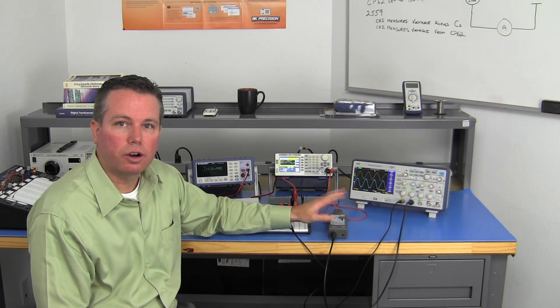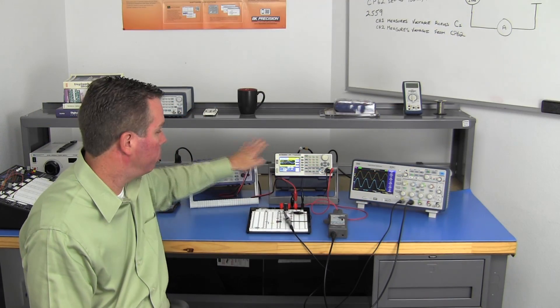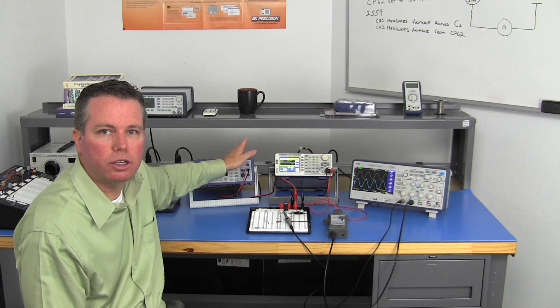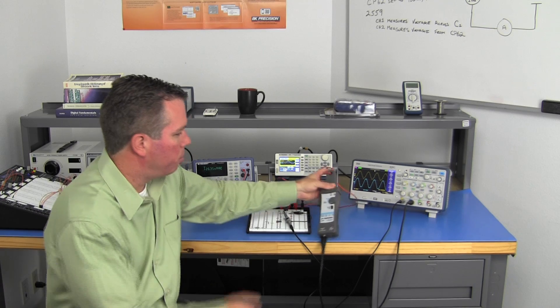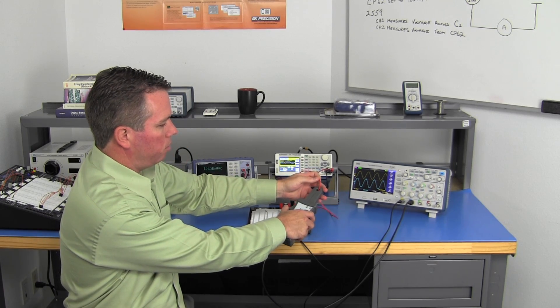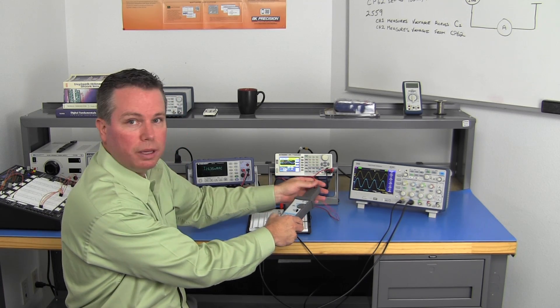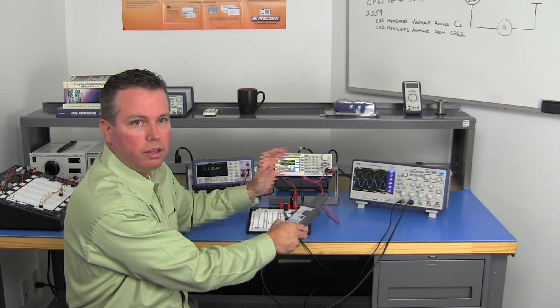A benefit of using a current probe, instead of a bench multimeter, is that you don't need to break the circuit in order to measure current. You clamp the current probe around one of the supply wires or any wire in the circuit and you're able to measure the circuit's current.